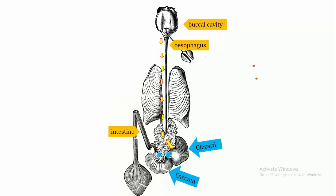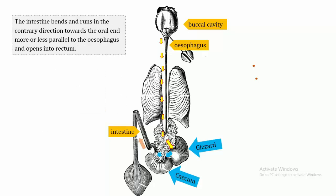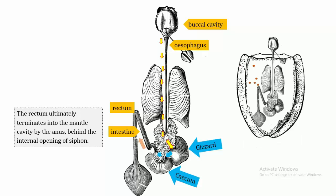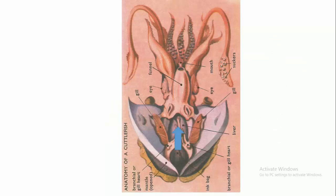The intestine bends and runs in the contrary direction towards the oral end, more or less parallel to the oesophagus, and opens into the rectum. The rectum ultimately terminates into the mantle cavity by the anus, behind the internal opening of the siphon.